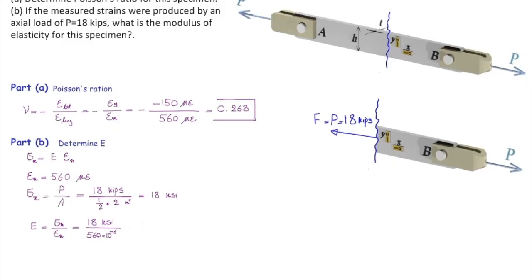I need to convert that into epsilon by multiplying by 10 to the minus 6. And that gives me 32,140 ksi. That is the modulus of elasticity for this material.